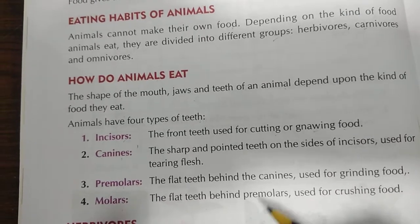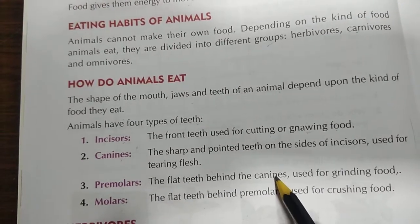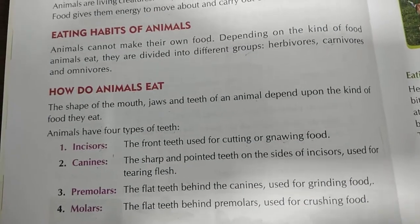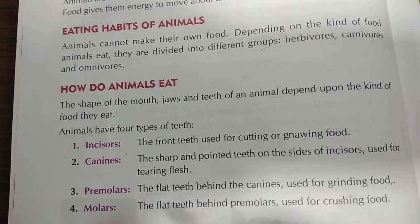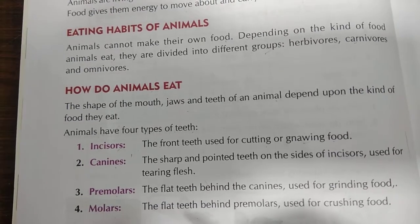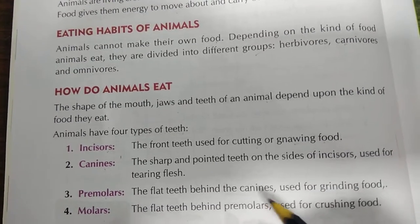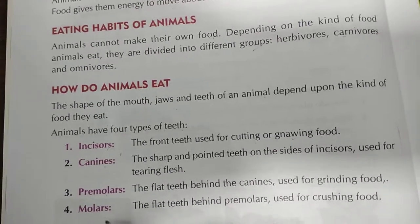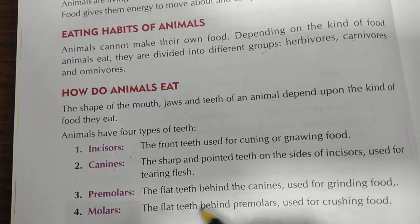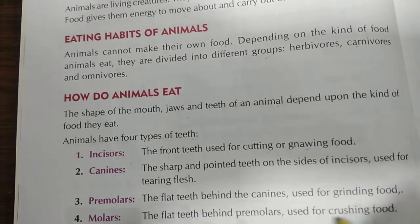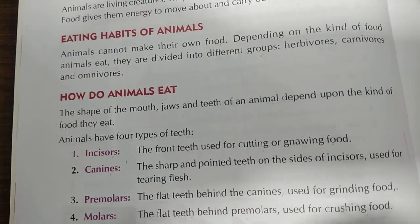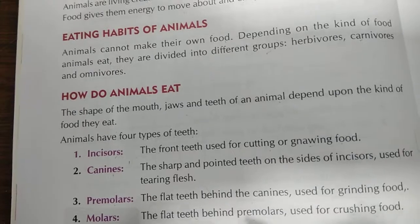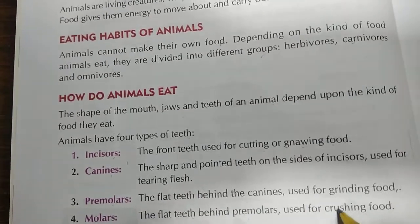The third type is premolars — the flat teeth behind the canines, used for grinding food. Premolars are the teeth used for grinding the food; they are behind the canines. The fourth type is molars — the flat teeth behind premolars, used for crushing food, breaking it into pieces.